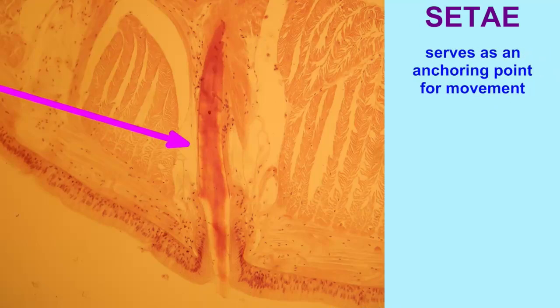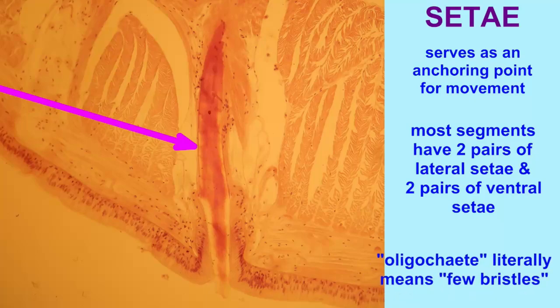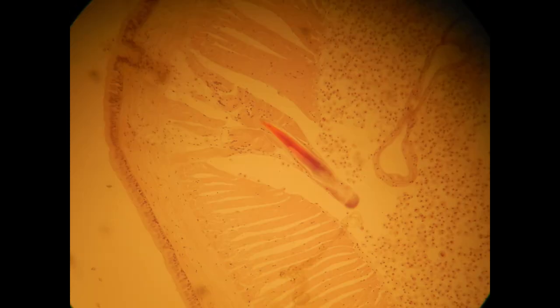Earthworms possess bristles known as setae, which allow certain segments to anchor to the substrate at a given point so that the muscles can pull on this point. Most segments have two pairs of lateral setae and two pairs of ventral setae.